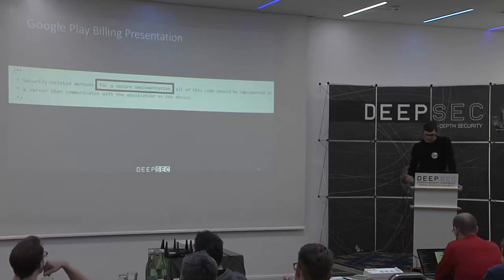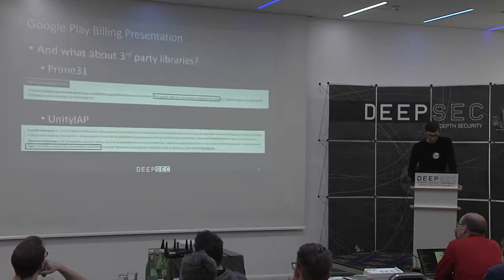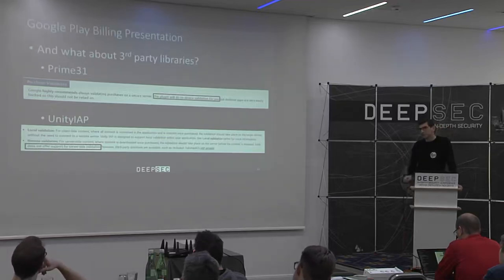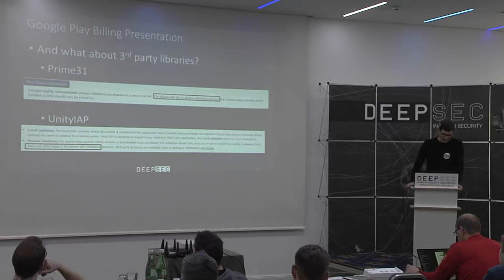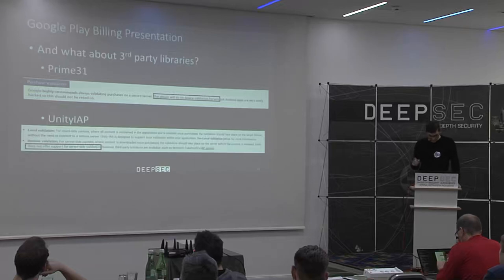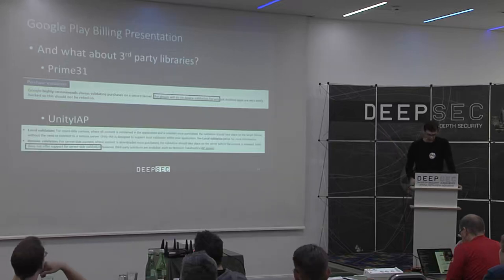Maybe people are not using Google Play Billing directly, but using third parties. Two well-known third parties used on Android are Prime31 and Unity IAP. Looking at Prime31's documentation under the purchase validation section, they say Google highly recommends always validating purchases on a secure server. However, the plugin will do on-device validation for you — but be careful, Android apps are very easily hacked, so they shouldn't be relied on.